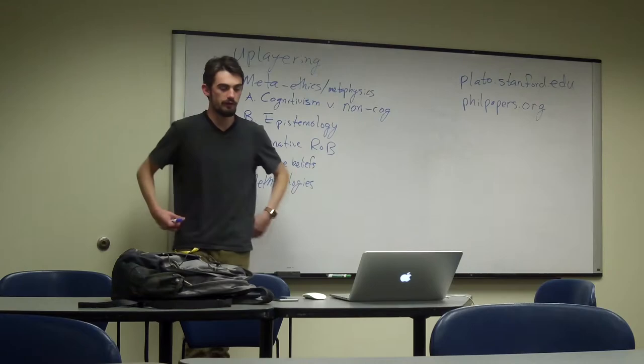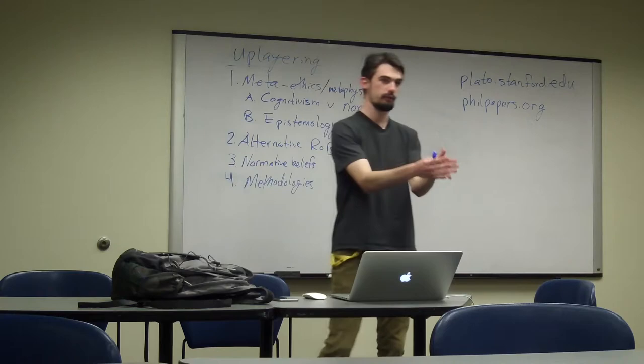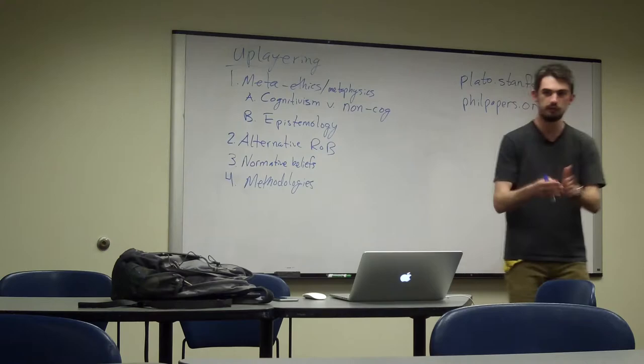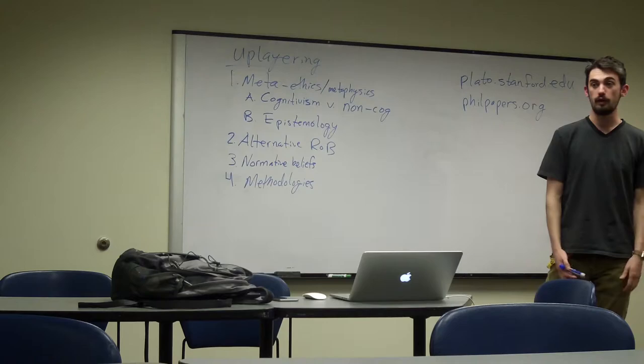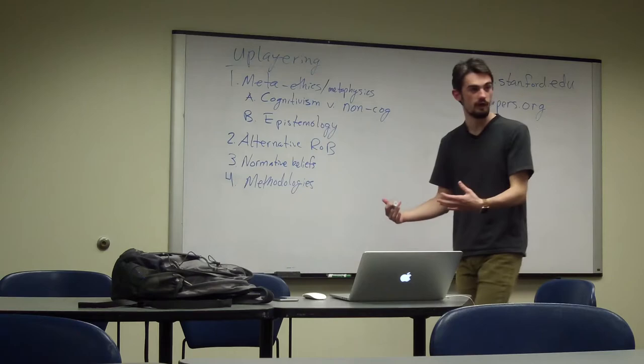Particularists say that we need to be concerned with specific examples. And the language that we often use for referring to this type of theory is considered case judgments. Particularists are concerned about considered case judgments. What does that mean? Quite simply, particularists are concerned about our intuitions on specific cases. What are our considered judgments about a specific case?